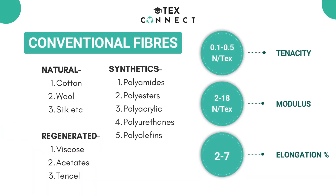Now we'll start with properties under the first category: conventional fibers. These include natural fibers like cotton, wool, silk, and jute; regenerated fibers like viscose and acetates; and synthetics like polyamides, polyesters, polyacrylic, polyurethane, and polyolefins. These have a tenacity range of 0.1 to 0.5 newton per tex. Since they are used for usual applications like apparel and clothing, tenacity and modulus are low, but higher elongation helps in comfort. The modulus is 2 to 18 and elongation percentage is 2 to 7.